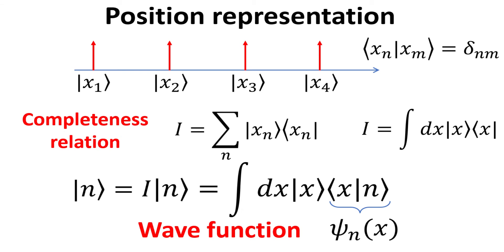In the limit where the discrete step between the basis vector localization positions are infinitesimally small, we arrive at an integral version of the completeness relation. Using the completeness relation, we can then express the n-ket in the position basis representation, which is now expressed as a superposition of the position basis vectors, with complex amplitudes given by the bracket of x with n, which is the wave function in the position representation.